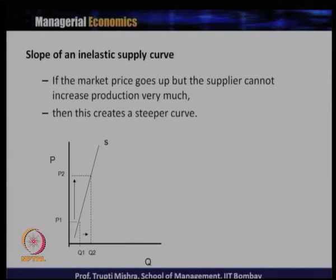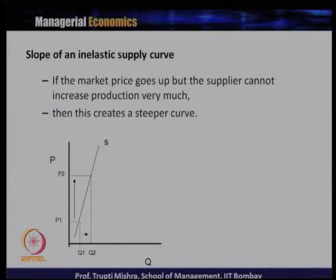If the market price goes up but the supplier cannot increase production very much, this creates a steeper inelastic supply curve. Here, the increase from P1 to P2 is very large while the increase from Q1 to Q2 is much smaller. The change in quantity supplied is much less than the change in price, which is why we get a steeper curve in the case of inelastic supply.